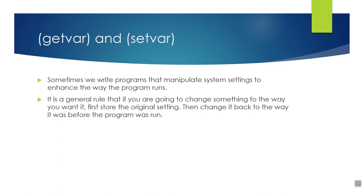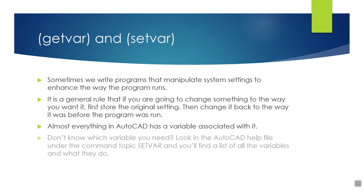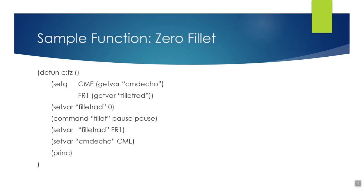Almost everything in AutoCAD has a variable associated with it — there are hundreds of them. If you don't know which variable you need, you can look in the AutoCAD help file under the SETVAR command topic, and you'll find a list of all the variables and what they do. There are dozens and dozens — it could take all day to go through them — so some internet searching can also help.